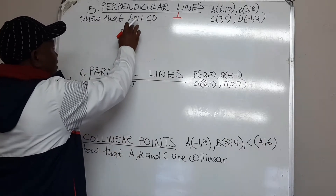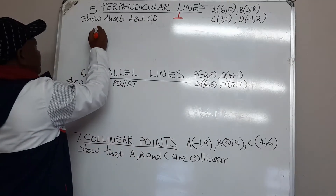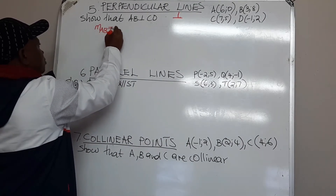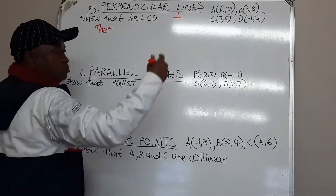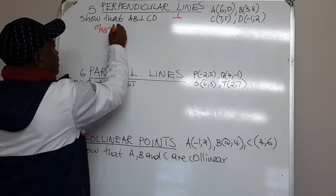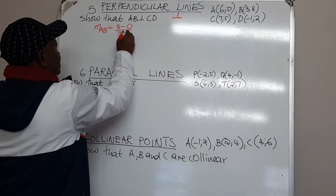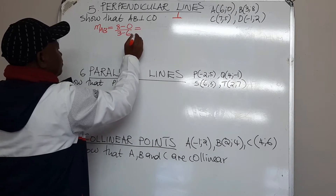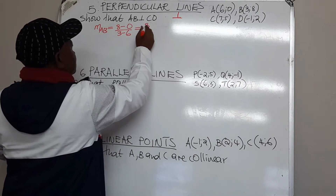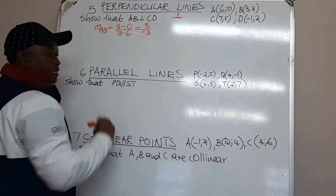We must show that AB is perpendicular to CD. Let's first find the gradient of AB. We know the gradient formula: y2 minus y1 over x2 minus x1. So, I will have 8 minus 0 over 3 minus 6, which gives me 8 over negative 3. So, this is the gradient of AB.